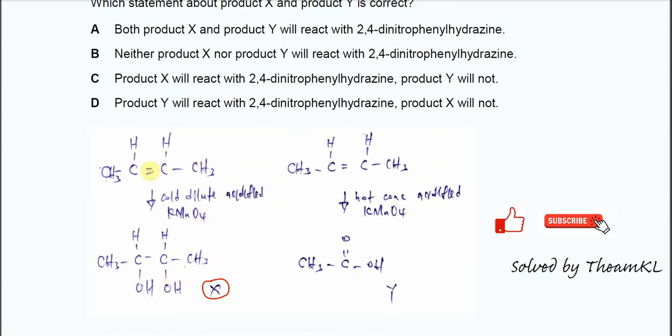So the butene, after it reacts with cold dilute acidified KMnO4, the C=C double bonds will form this diol. The double bonds break and eventually it will get oxidized and form diol. So this is the compound X.